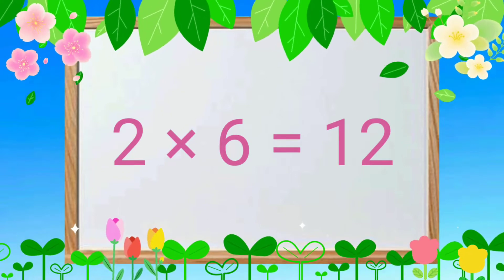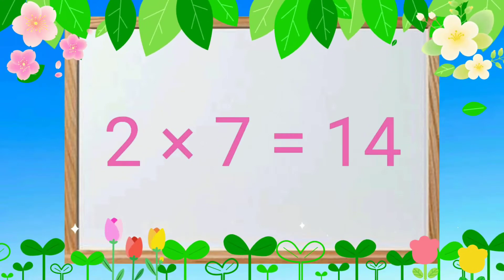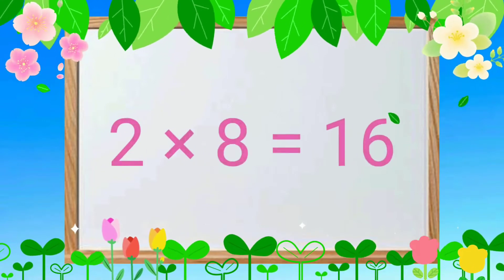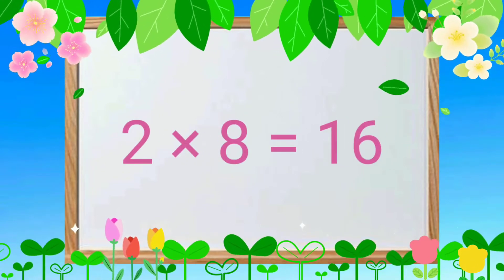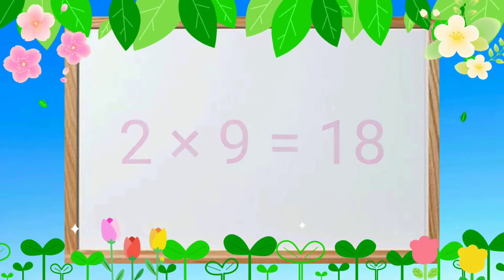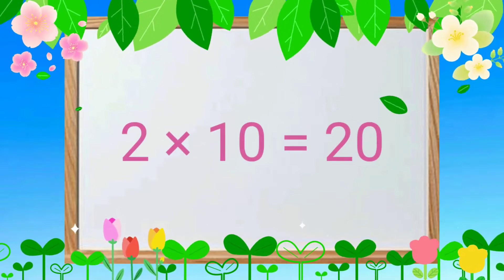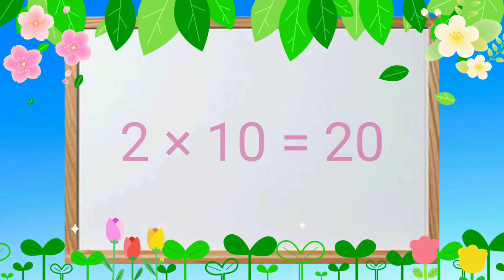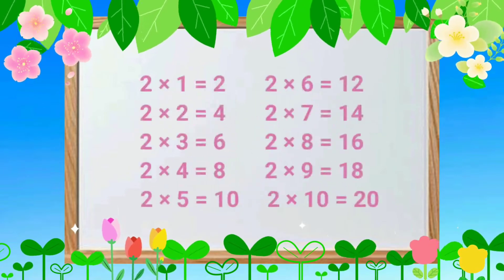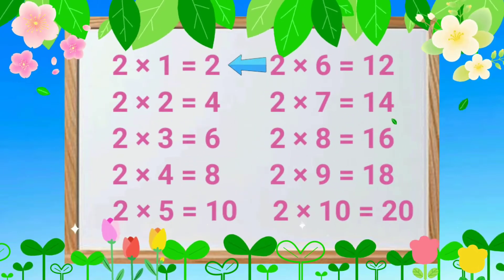2-6s are 12, 2-7s are 14, 2-8s are 16, 2-9s are 18, 2-10s are 20. Let's read again. 2-1s are 2.